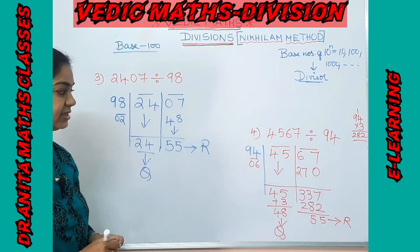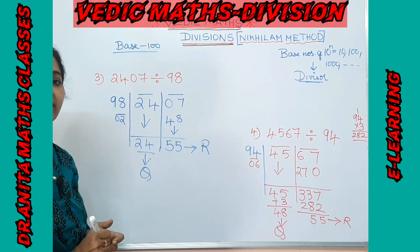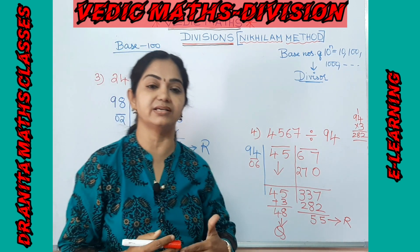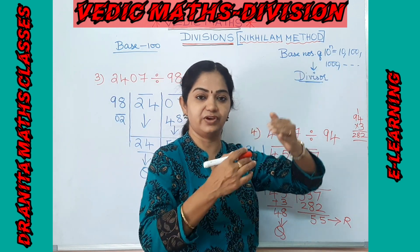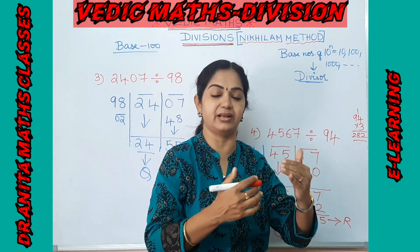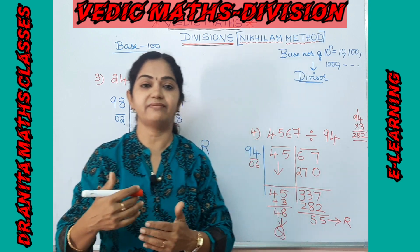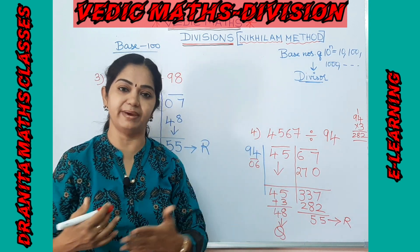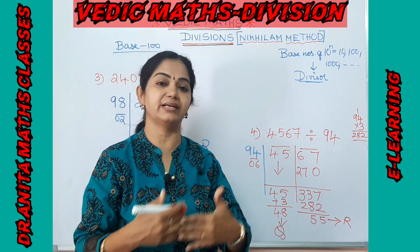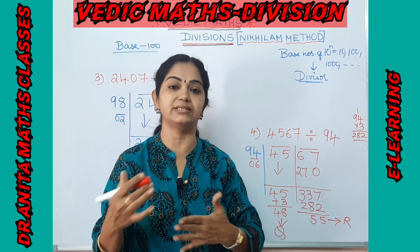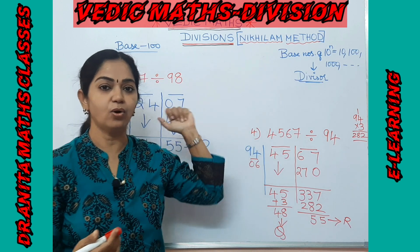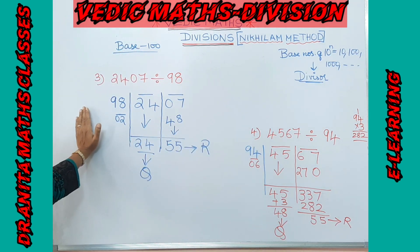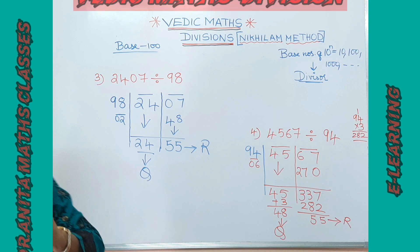Likewise, we can simply perform divisions when the divisors are near to base 10 — such as 6, 7, 8, 9 — or near base 100 — such as 86, 87, 96, 97. This is called the Nikhilam method. Hope you have understood this method. We'll see a new technique in our next session. Thank you all.